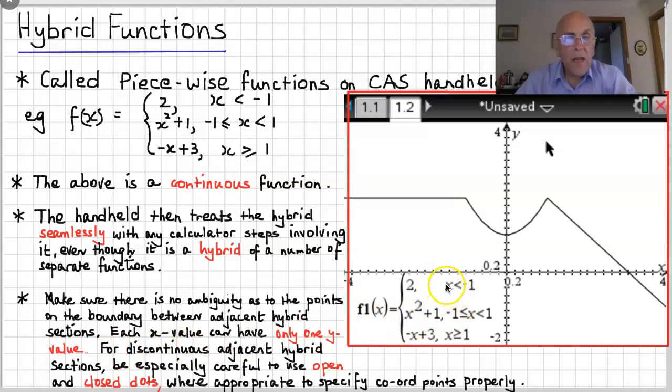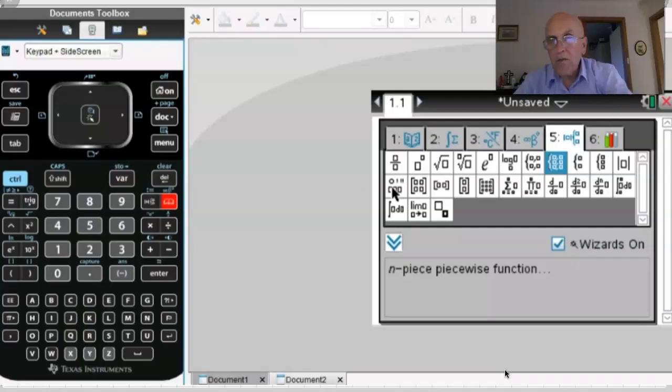See here, I've said for x less than minus 1, but where x is actually equal to minus 1, it's actually this bit here, x squared plus 1. It belongs to that part of the hybrid function. So then I've gone along there to less than 1, but then for 1 and above, the function is this bit. For discontinuous adjacent hybrid sections, be especially careful to use open and closed dots where appropriate to specify the coordinates properly. It's very important.